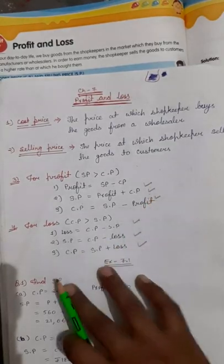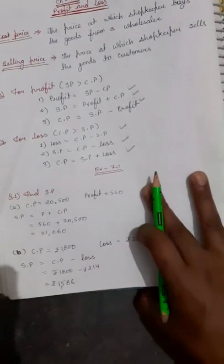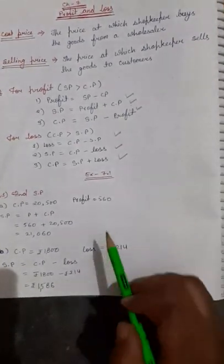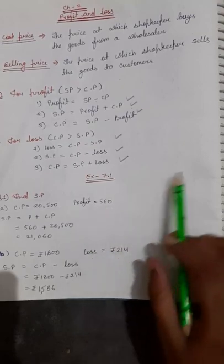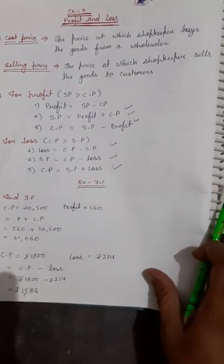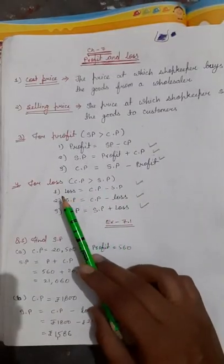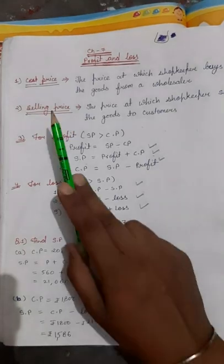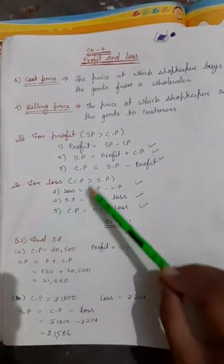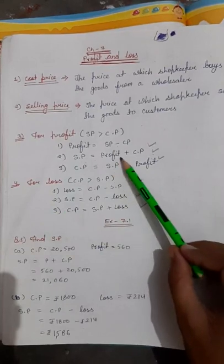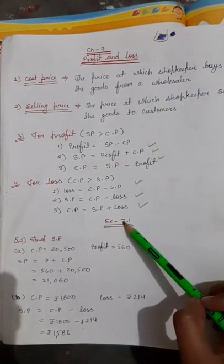After learning these formulas, it is very easy to solve any kind of question given in your book. Now look at exercise 7.1. I am not going into detail beyond what I have already explained here — cost price, selling price, profit and loss. You have to remember only these things and learn the formulas.